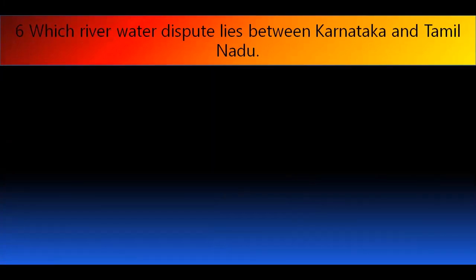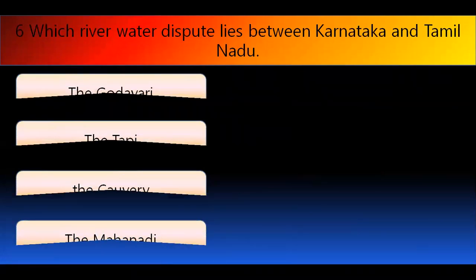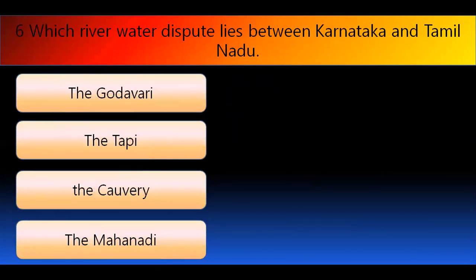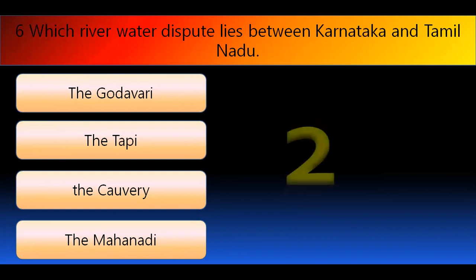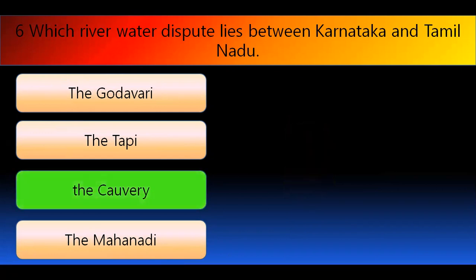Which river water dispute lies between Karnataka and Tamil Nadu? The right answer is the Kaveri river — Kaveri river water flows through both Karnataka and Tamil Nadu.